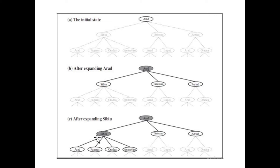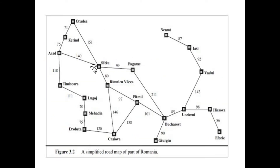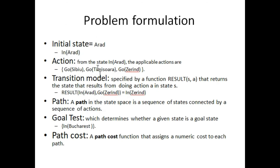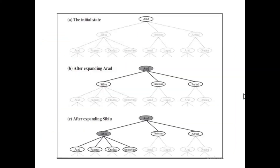If we are moving towards Sibiu, then at that location we can move towards Fagaras, we can move towards Rimnicu Vilcea, we can also move towards Oradea, and we can also move back towards Arad. So there are four possible actions for this state. For each step we calculate the problem formulation in this way — we list the actions and their possible resulting states.